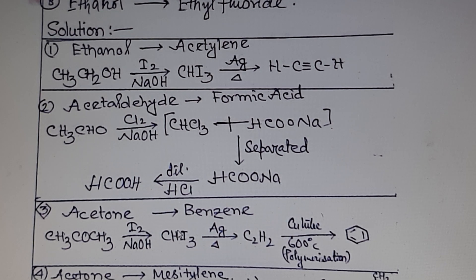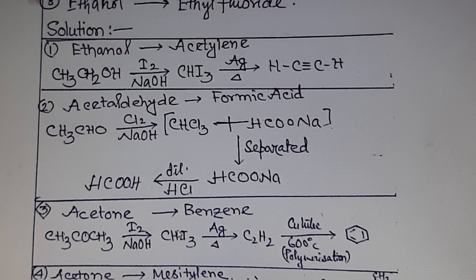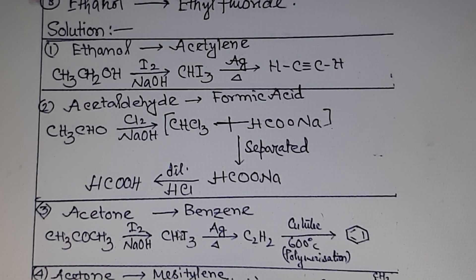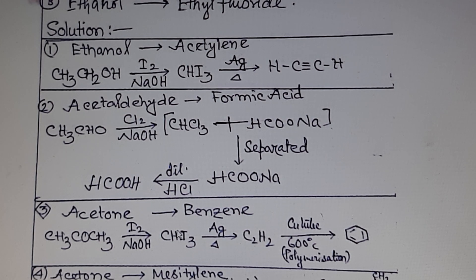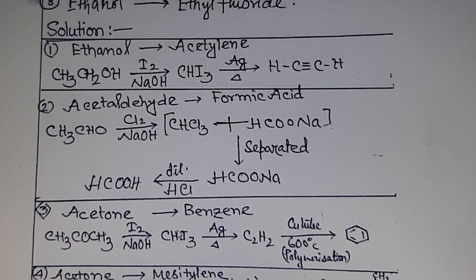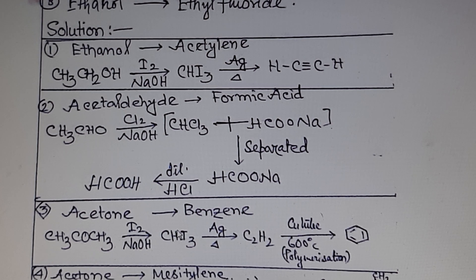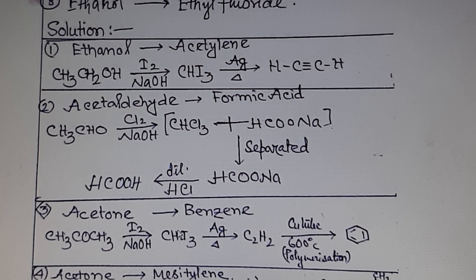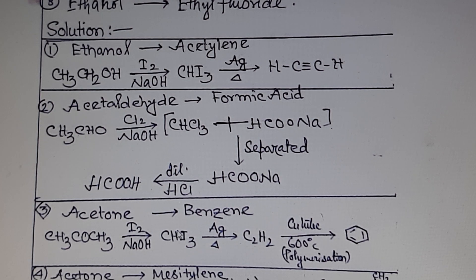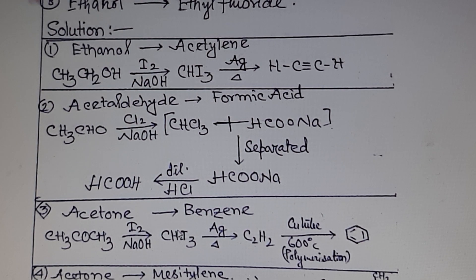Acetone undergoes the haloform reaction — since it contains a CH₃CO group connected to a carbon, acetone reacts with iodine in the presence of NaOH to form iodoform. Iodoform then reacts with silver dust when heated to form acetylene. Acetylene undergoes polymerization when passed through a hot copper tube to form benzene — three moles of acetylene polymerize to form benzene.